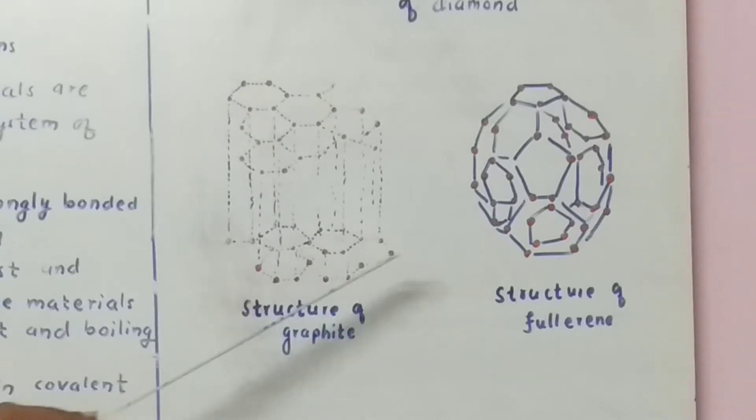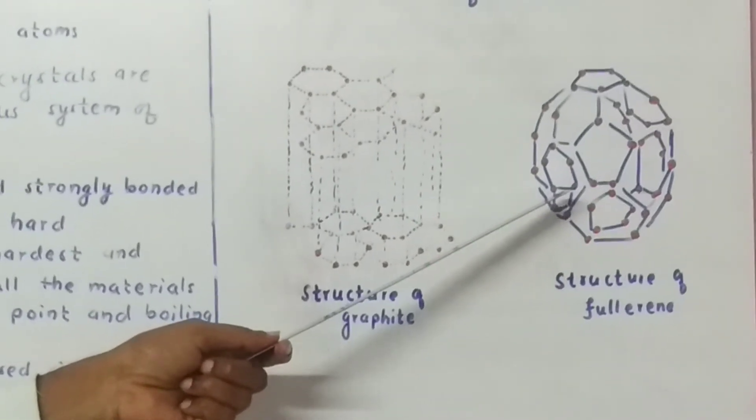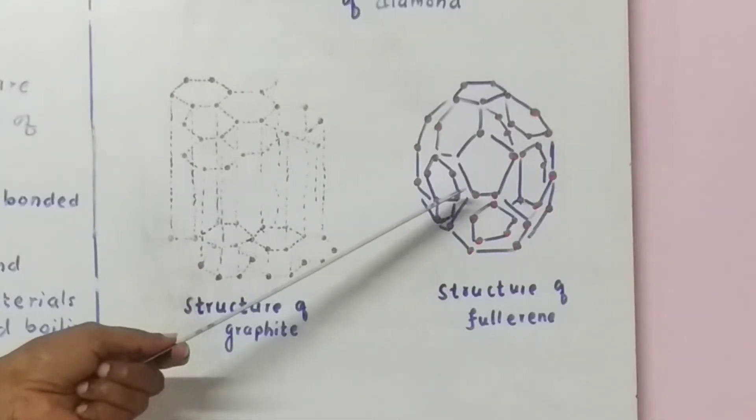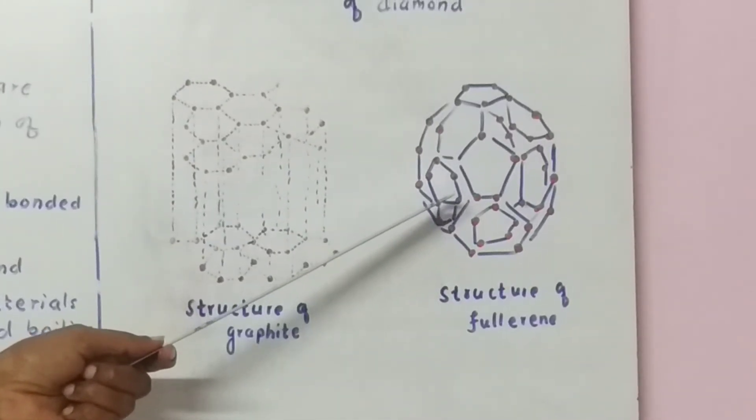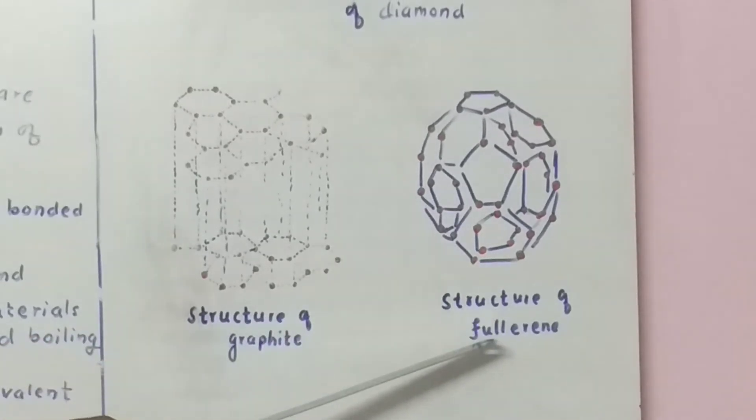Then third one is fullerene. It is also allotrope of carbon discovered by Buckminster Fuller. That is why the name is given fullerene.